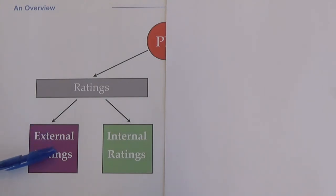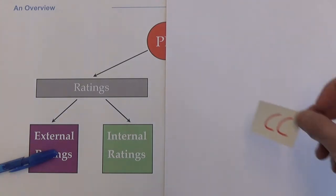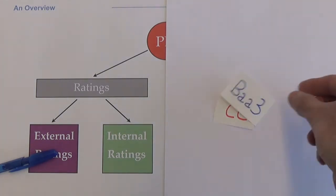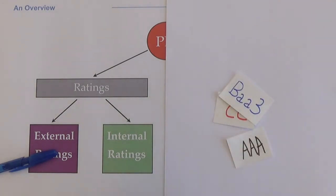For what concerns external ratings, we have said that every rating agency has its own rating scale, but the ratings of the top three agencies - Moody's, Standard & Poor's, and Fitch - are considered comparable.